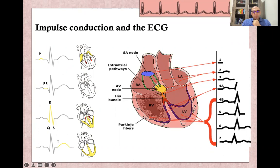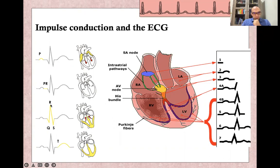Once the impulse travels through the His bundle, then the right bundle branch, the left bundle branch, and both ventricles depolarize, this completes the QRS complex. Then ventricular repolarization is shown in the T wave. To summarize: the P wave represents both atrial depolarization, the QRS complex represents both ventricular depolarization, and the T wave represents both ventricular repolarization.